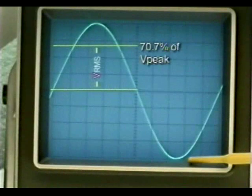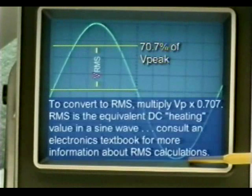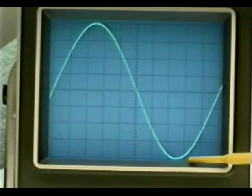The root mean square or RMS voltage of a sine wave is 70.7 percent of the peak voltage. To get the RMS value of a sine wave, multiply the peak voltage of the sine wave by 0.707. RMS is the equivalent DC heating value in a sine wave. You can consult an electronics textbook for more information about RMS calculations.